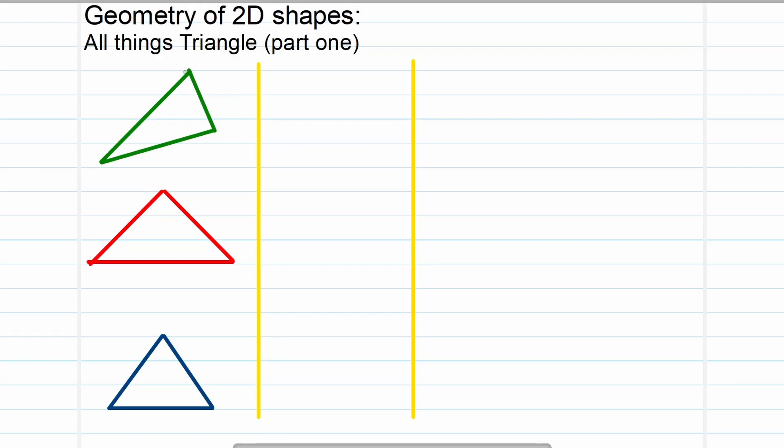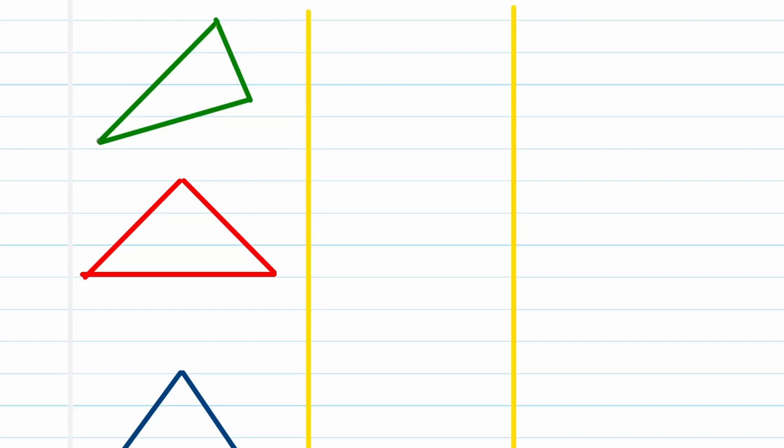When we're talking about triangles, we are talking about a diagram that has three angles. As you can see here, three points of interception - this is known as a triangle.